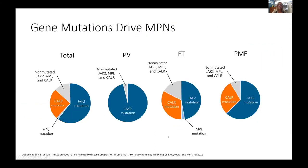MPNs are caused by mutations in specific genes. In PV, almost all patients have a mutation in JAK2. In ET, about 50% have a JAK2 mutation, about 25% have a mutation in CalR or CalReticulin, a small proportion have a mutation in MPL, and the remaining are triple negative — without mutations in those three genes. In myelofibrosis, the breakdown is similar to ET: most have JAK2 mutations, with minorities having CalR, MPL, or being triple negative.